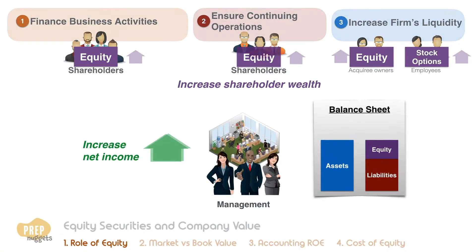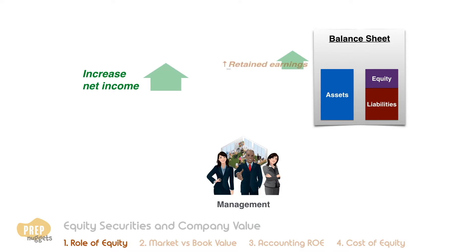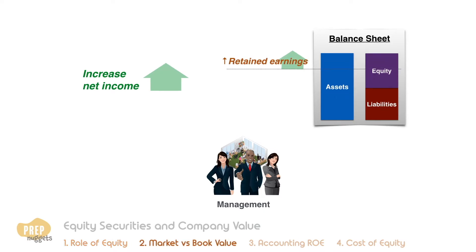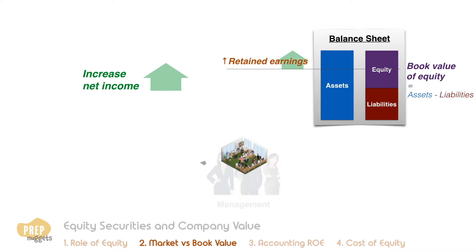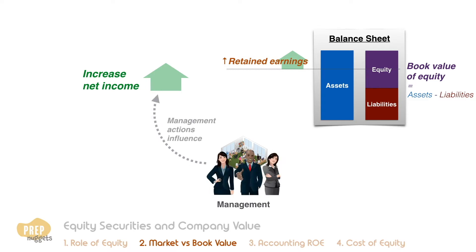Increasing net income has the effect of increasing retained earnings on the firm's balance sheet, which increases the book value of equity of the firm. The book value of equity is the difference between the total assets and total liabilities of the firm. The more net income that is earned and retained, the greater is the book value of equity. Because management's decisions directly influence a company's net income, they also directly influence its book value of equity.